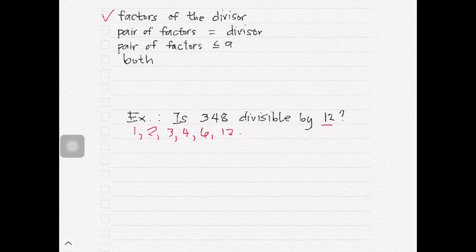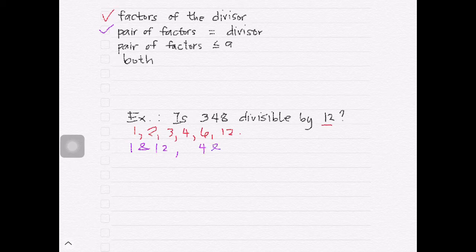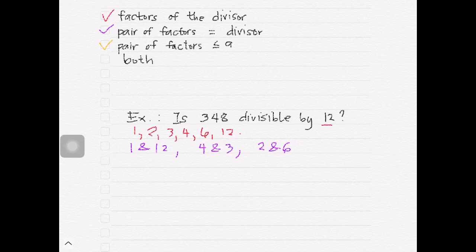Next, we check the pairing of factors that will be equivalent to our divisor, which is 12. Our pairings would be 1 and 12, 4 and 3, and 2 and 6. The next part of the checklist is to get the pair of factors that, as much as possible, would be less than or equal to 9.